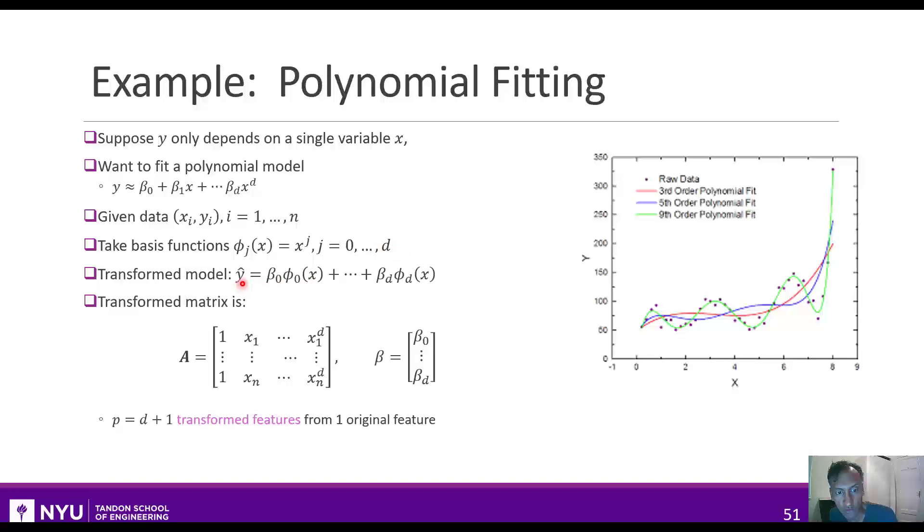When you make that definition, the transform model is just a linear combination of these basis functions, and the transform matrix is just each column of A will just be the data to the power d. And then we can compute the beta hat just as we saw in the previous slide. Again, we'll talk about how to select the d in the next lecture.